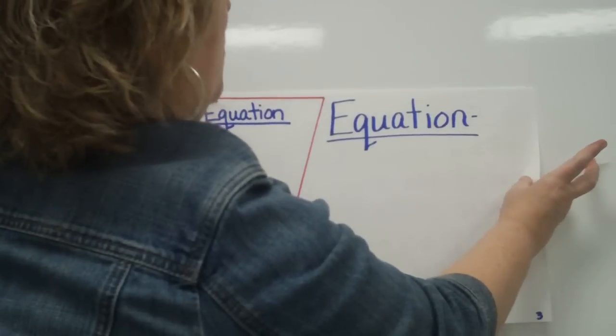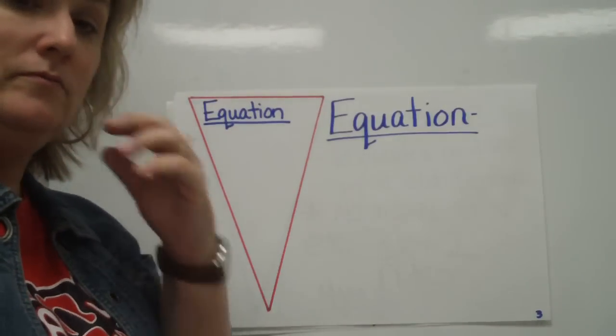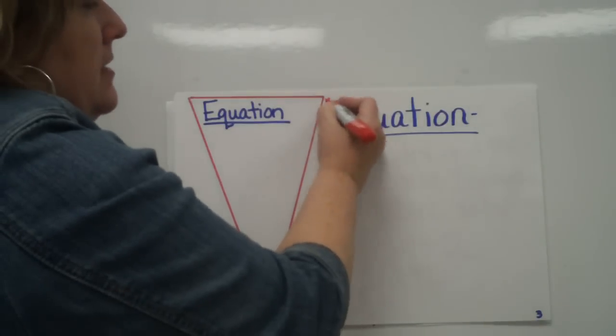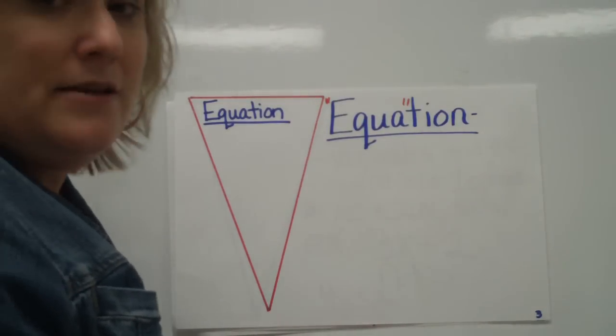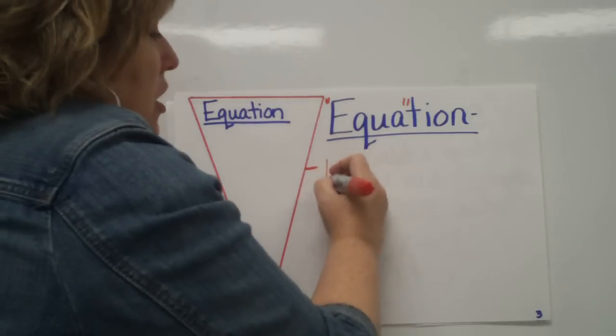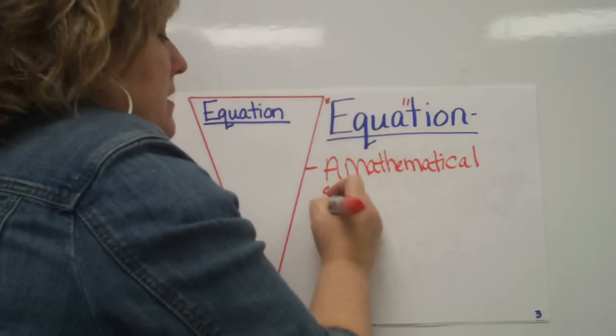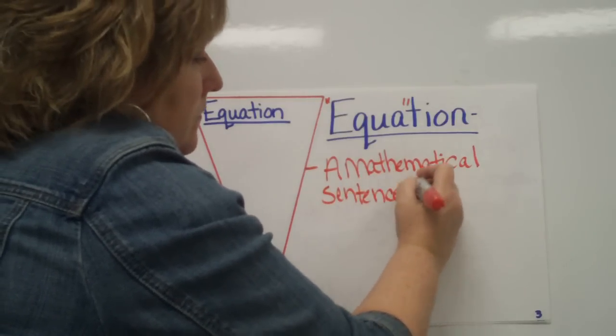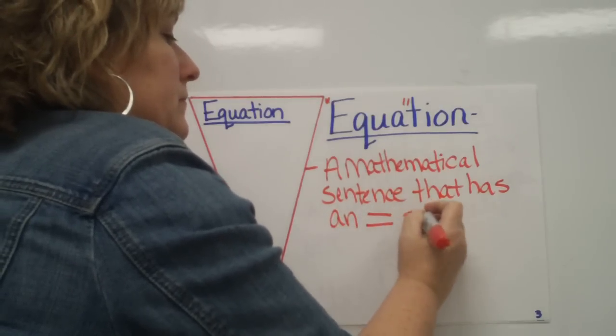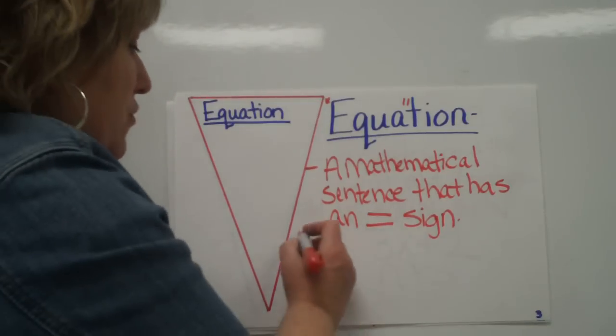The word equation is another piece of pie. It's a very simple definition - you know this. The way I kind of look at it is an equation kind of sounds like equal, and so I would put down here: a mathematical sentence that has an equal sign. Pretty straightforward, pretty self-explanatory.